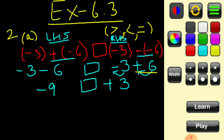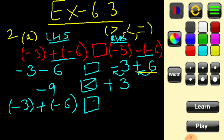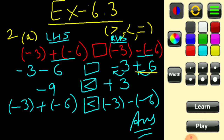Now compare: which is greater, minus 9 or plus 3? Obviously plus 3 is greater, so the crocodile's mouth opens toward plus 3 — the left hand side is less than the right hand side. Writing the answer: minus 3 plus minus 6 is less than minus 3 minus of minus 6.